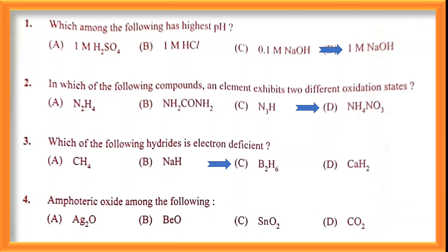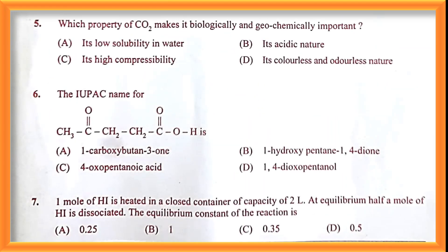Question number four: amphoteric oxide — among the following, which oxide shows both acidic as well as basic character? This is a homework for you — tell your answer in the comment section. The options are CO, B₂O₃, SnO₂, and CO₂. Which one is the amphoteric oxide? Comment your answer.